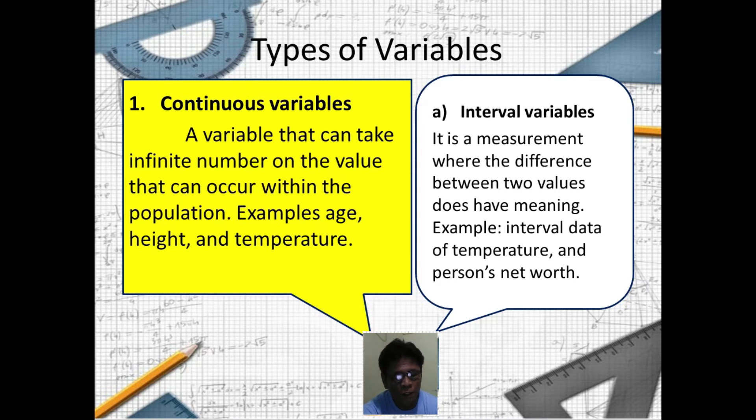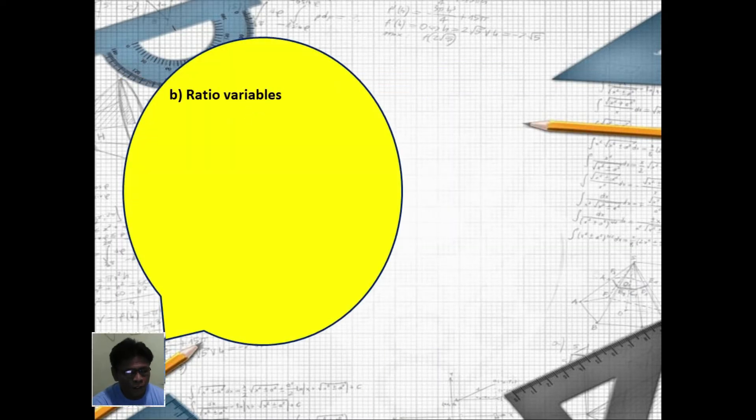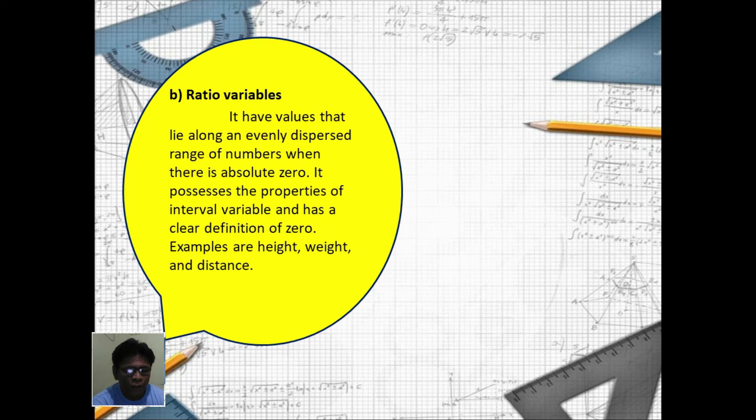Example: the interval data of temperature and the person's net worth. Letter B: We have the ratio variables. It have values that lie along in evenly dispersed range of numbers when there is absolute zero.